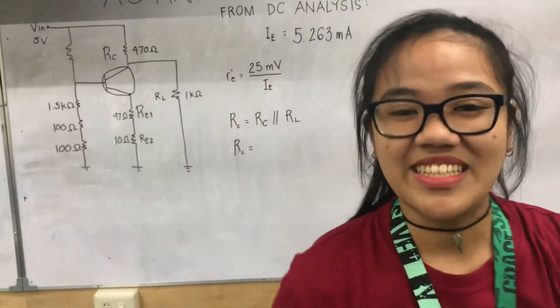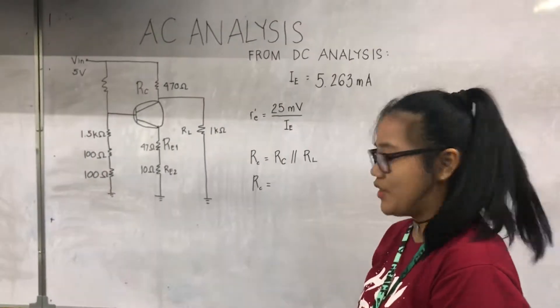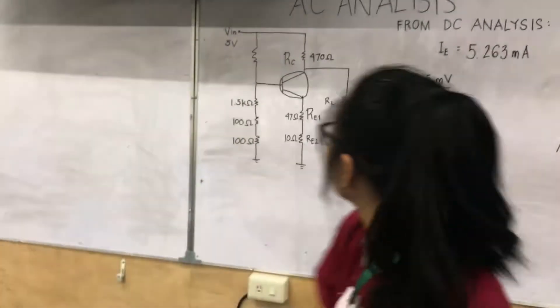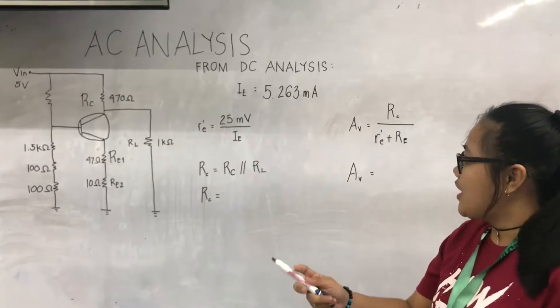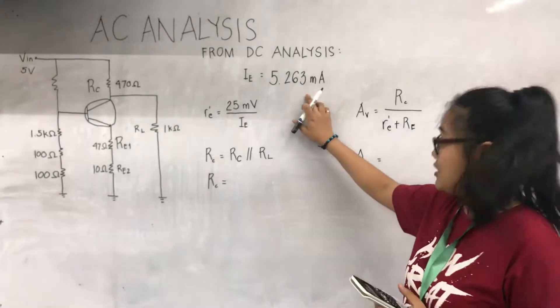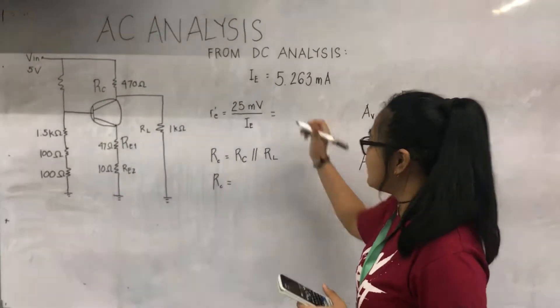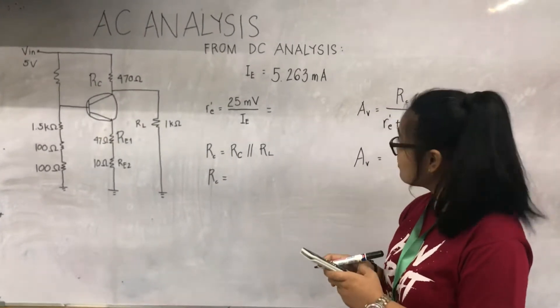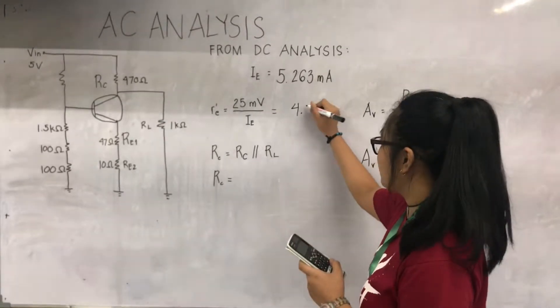Now, Fatima will explain the AC analysis. Hi, I'm Fatima, and I'll be explaining the AC analysis of the common emitter amplifier. From the DC analysis, we have our emitter current as 5.263 milliampere. Computing for the internal resistance, we have 4.75 ohms.